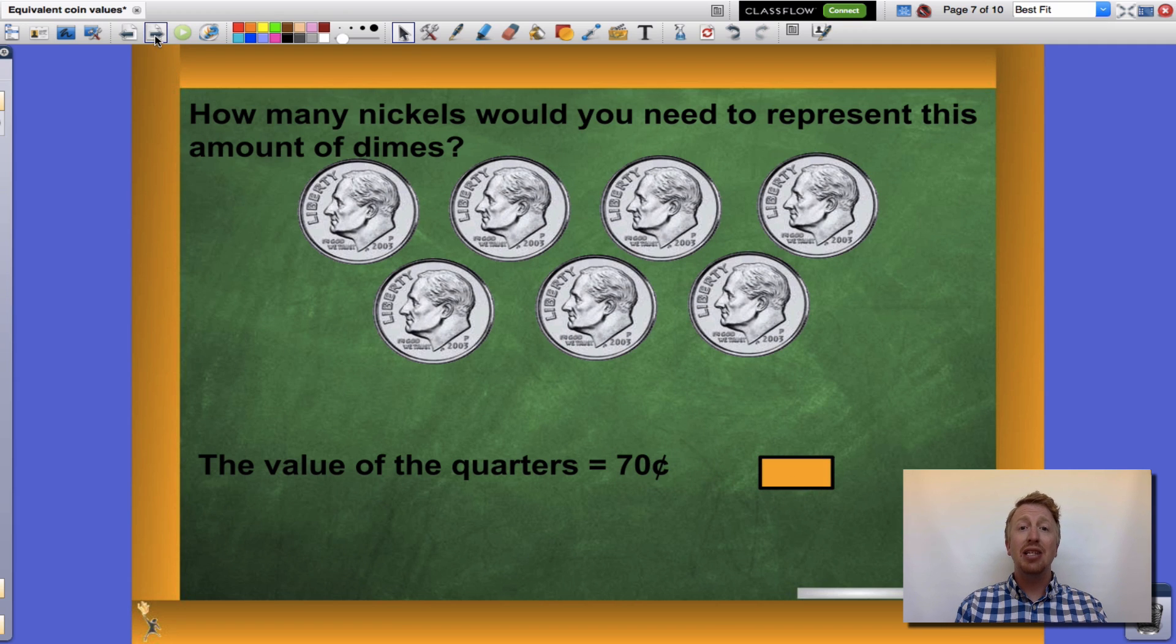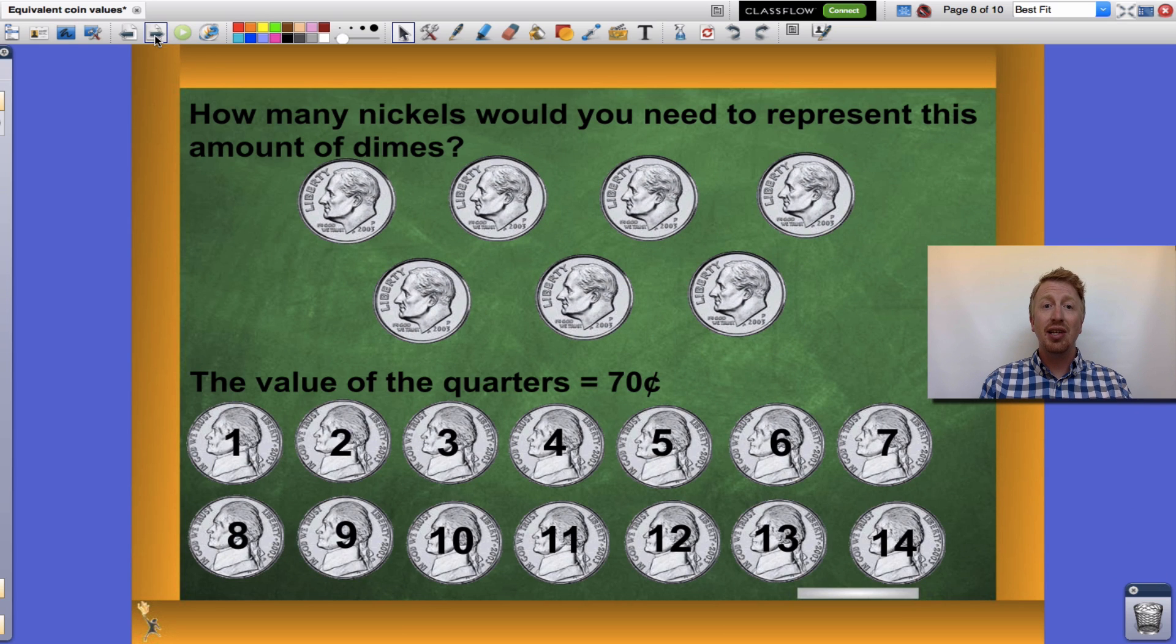How many nickels would I need to equal seventy cents? Nickels are worth five cents a piece. I would need fourteen nickels to equal seventy cents.